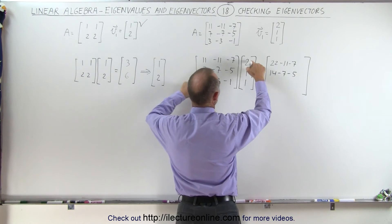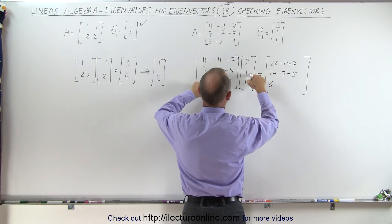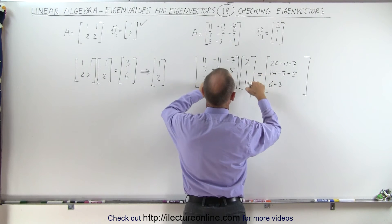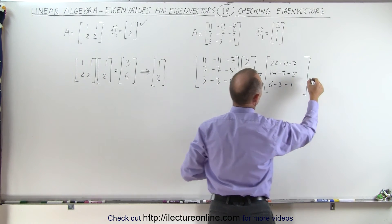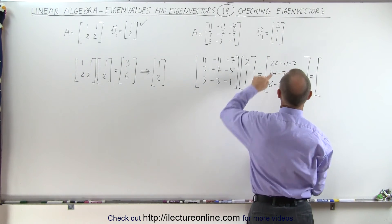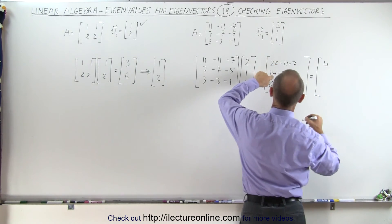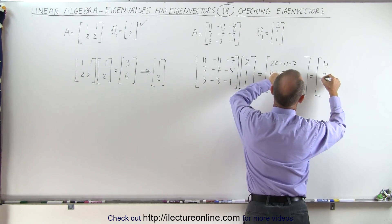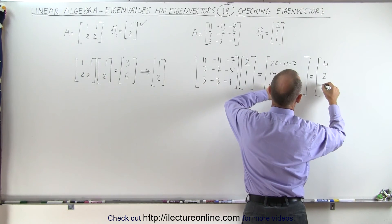And then finally we get 2 times 3 which is 6 minus 3 and minus 1, which is equal to, when we simplify that, 11 minus 7 which is 4, 7 minus 5 which is 2, and 3 minus 1 which is 2.